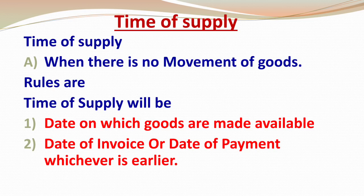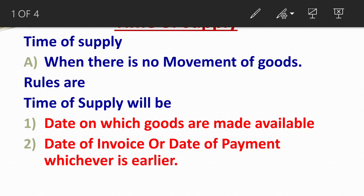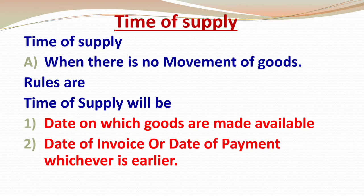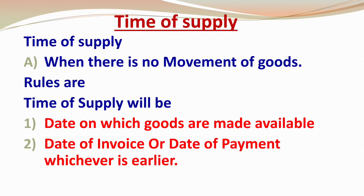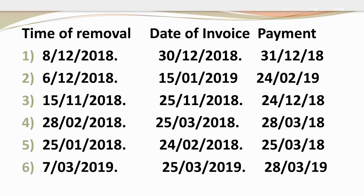The first case we will study is when there is no movement of goods. The rule is: Time of Supply will be the date on which goods are made available, or the date of invoice, or the date of payment — whichever is earlier. So you have to remember these three dates: date on which goods are made available, date of invoice, and date of payment. Whichever date is earliest, that will be the Time of Supply.